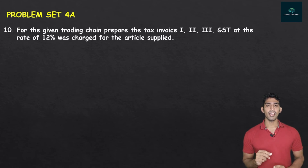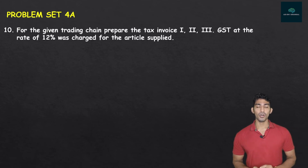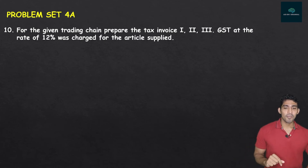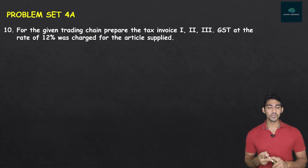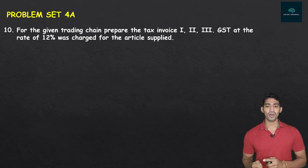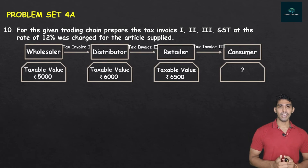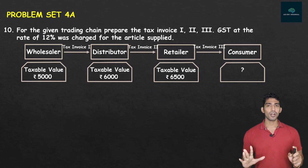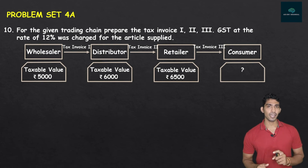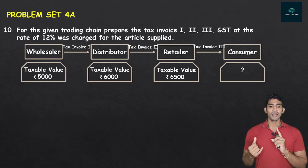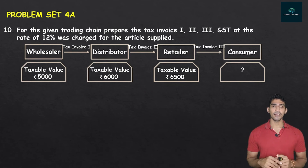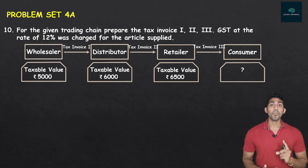Today's last question: Problem Set 4A, Question 10. For the given trading chain, prepare tax invoice 1, tax invoice 2, and tax invoice 3. GST at the rate of 12% was charged. There is a diagram in the textbook. The characters are: wholesaler, distributor, retailer, and consumer. Taxable values: wholesaler Rs. 5,000; distributor Rs. 6,000; retailer Rs. 6,500; consumer's amount needs to be found.